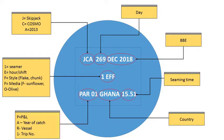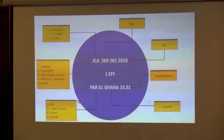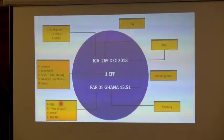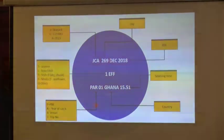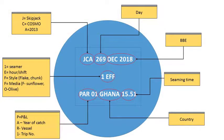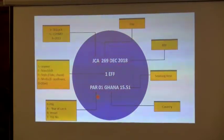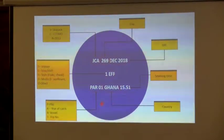They also record the hour and the shift which processed it, the style of the product, the medium — whether it's sunflower oil or olive oil — and a code which identifies the fishing method, the year of the catch, and the vessel.